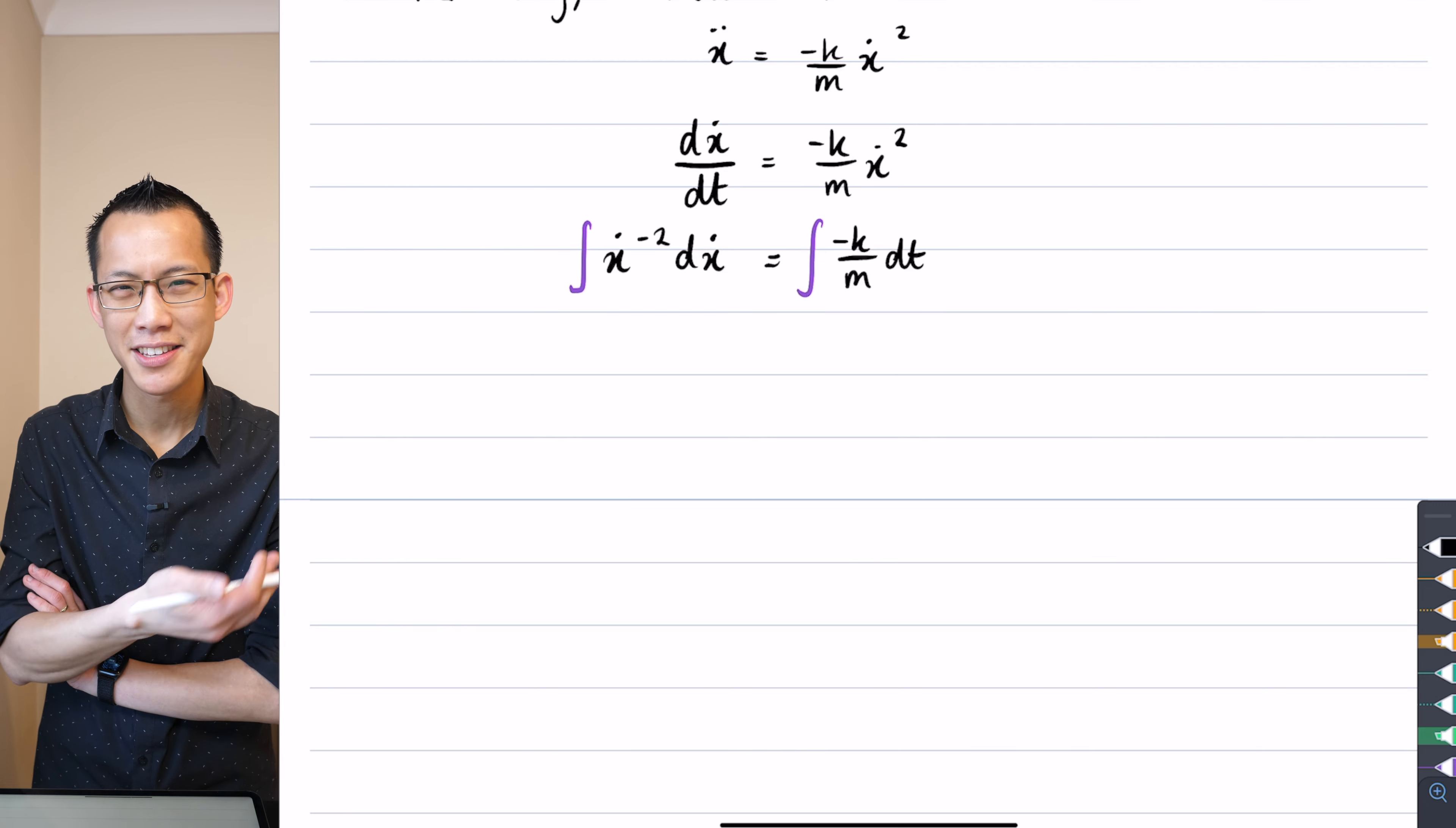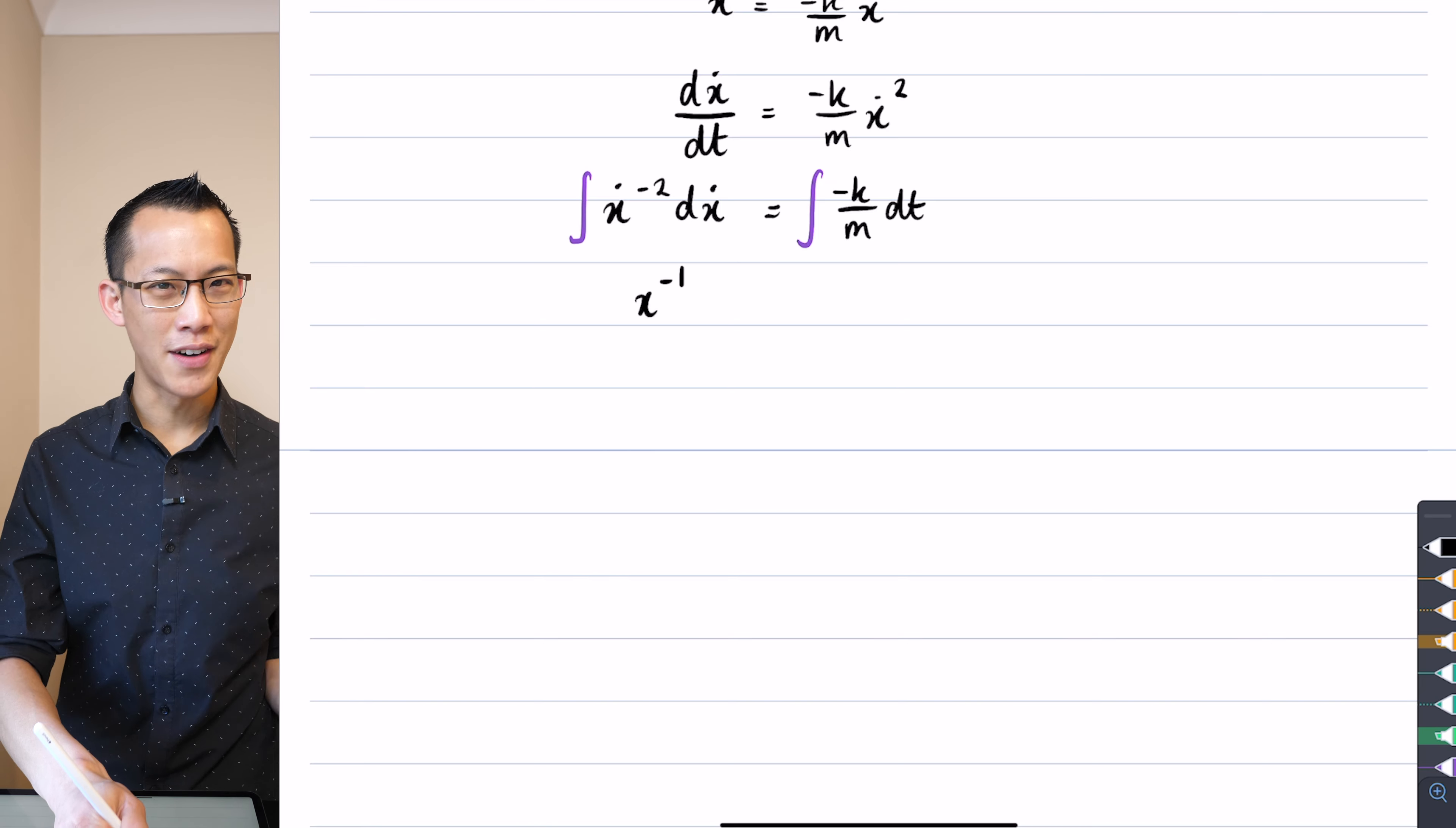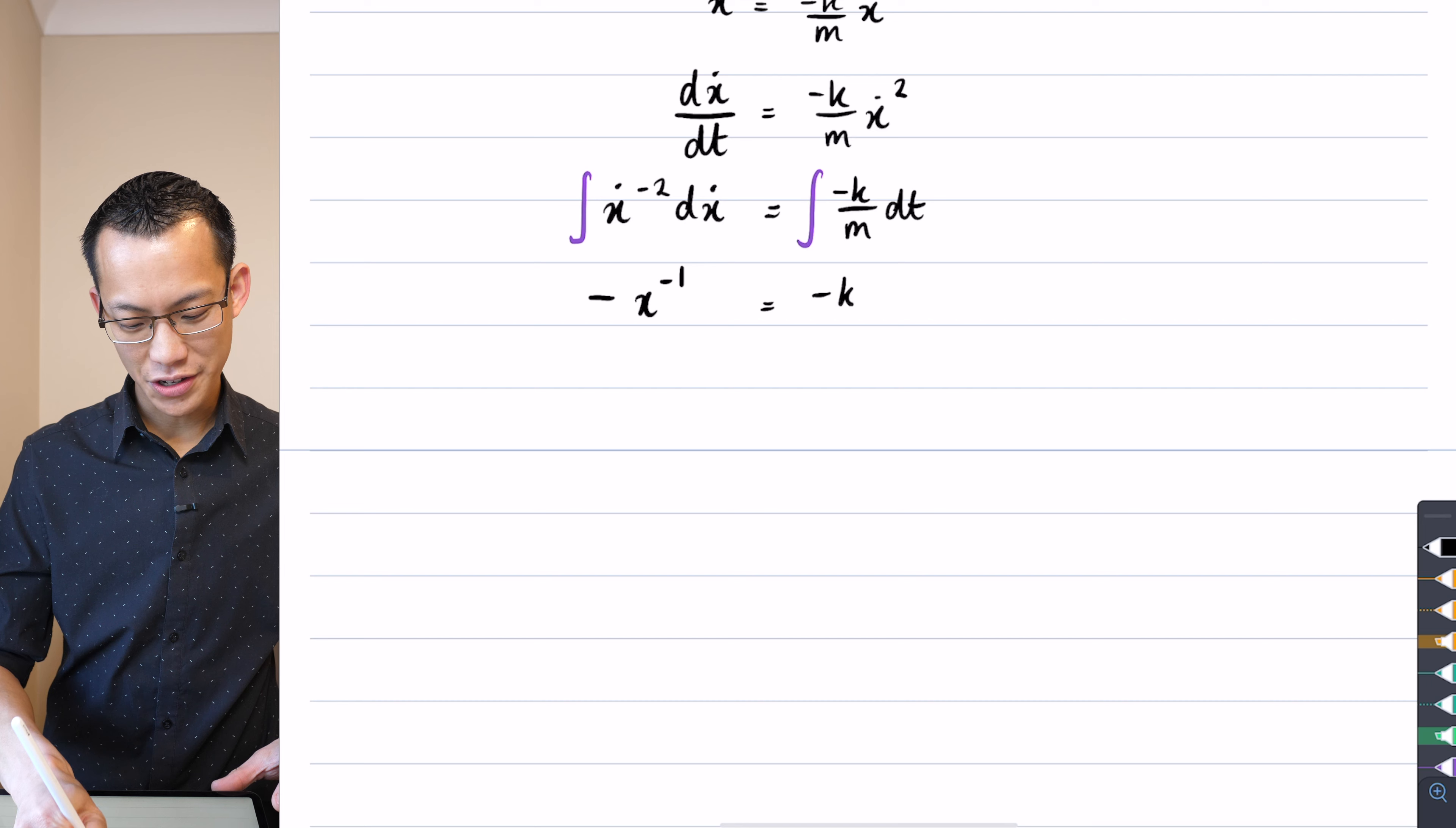Now even though it looks weird, see through the mess of notation and x dot and all that kind of thing - you could call it v if you like and integrate with respect to v - this is just polynomial. This is just a power rule. All I need to do is take that power, increase it by one, and then divide by the new power. And at the moment my power is negative two, so it's going to increase by one to negative one, and then I'm just going to divide through by the new power. Dividing through by negative one is the same as multiplying by negative one. So I've just integrated the left hand side - no exponential in sight. That's because this is quadratic drag, not linear drag.